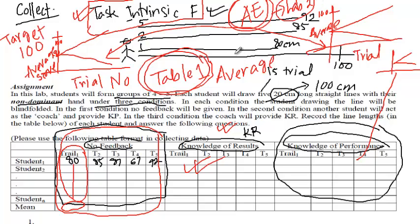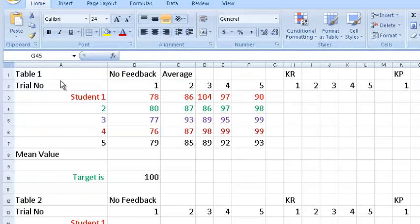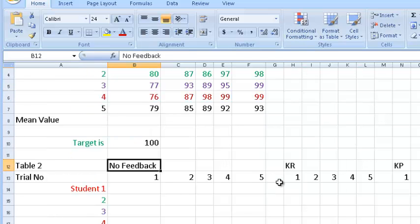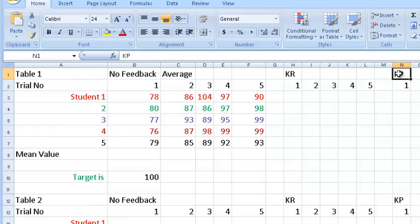Now I will show you with a dummy set of values how to compute the average and create these graphs, and also how to compute the absolute error and display these three graphs. However, knowledge of results and knowledge of performance computations have to be done by you. In this segment I'm going to show you how to compute the average using the no feedback case and then compute the absolute average error for no feedback. The other two cases — KR and KP — need to be done by you following the method I'm about to show.